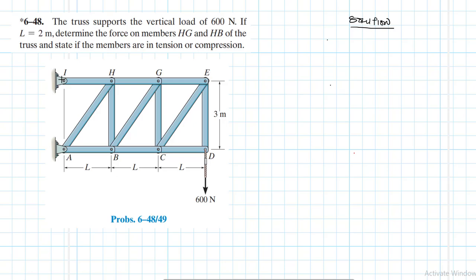At hinge I, we're only going to have one reaction in the direction of IH — that reaction force is Ix. At pin A, the inclined member HA introduces a vertical component, so we're going to have two reaction forces: Ax and Ay.